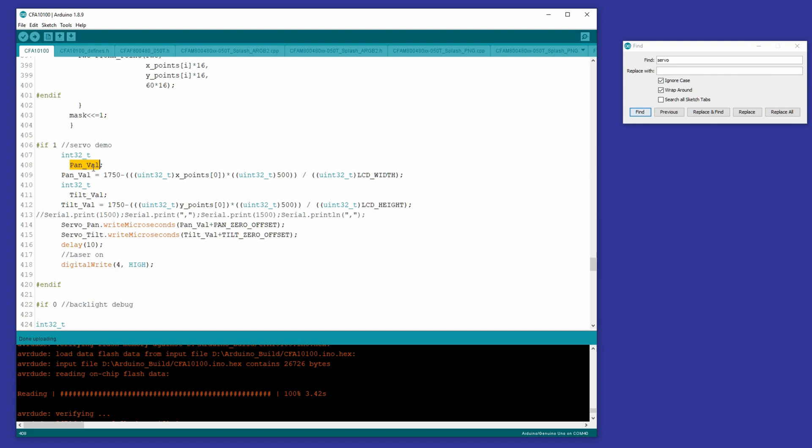And at that point, we simply, we want to know what value to write to the servo for the pan, that's side to side, and the tilt, that's up and down. So the pan value, we start with the X, the first X point touched, because it's a multi-touch display, the touch is coming in an array.